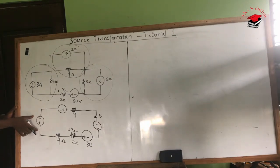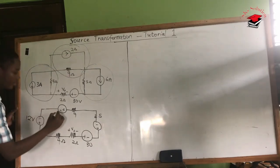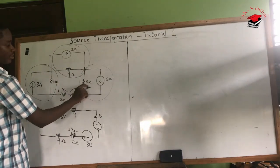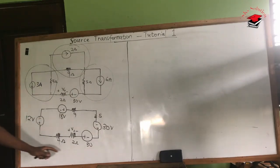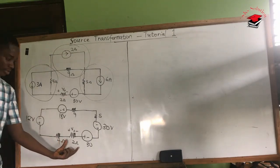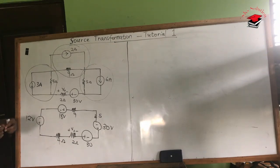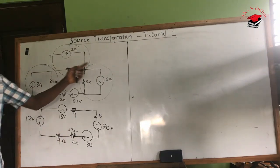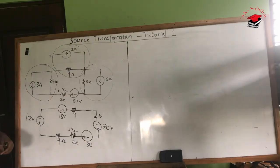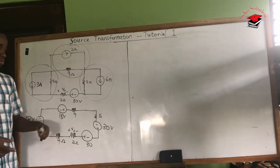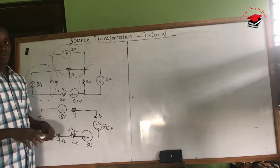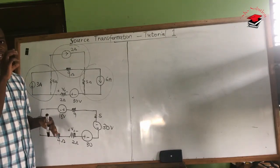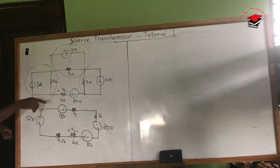Now let's calculate the voltage values. Using V = IR: for the 4-ohm branch, that gives 12 volts; for the 9-ohm branch, 2 times 9 gives 18 volts; and for the 5-ohm branch, 6 times 5 gives 30 volts. We now have a series circuit with the same current flowing through, and we need to find the voltage across the 2-ohm resistor. We can use V = IR or the voltage divider rule. We have four voltage sources in series, so we can add or subtract to get an equivalent voltage.